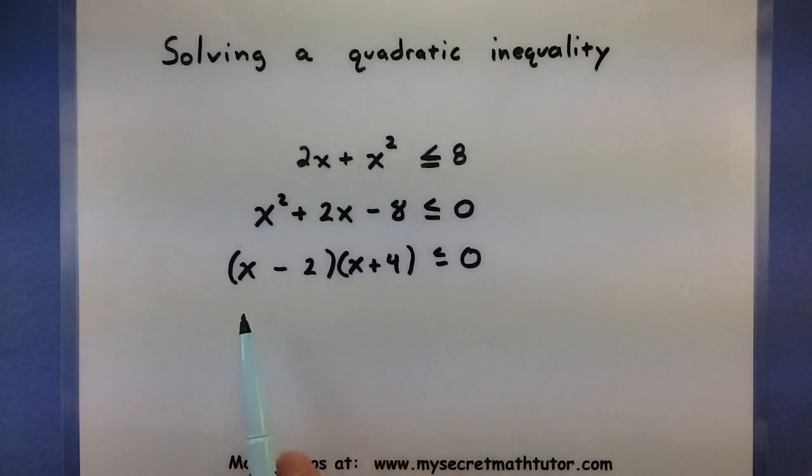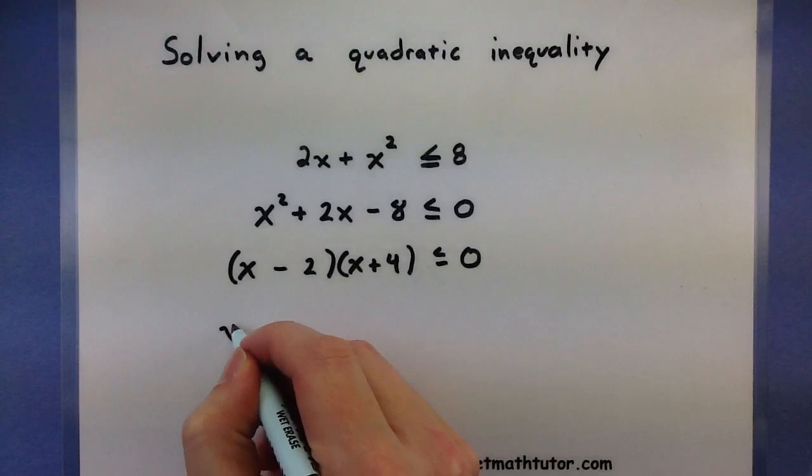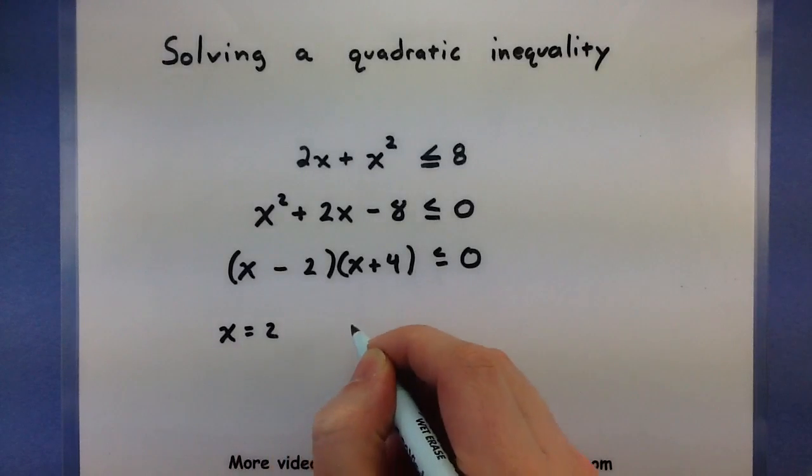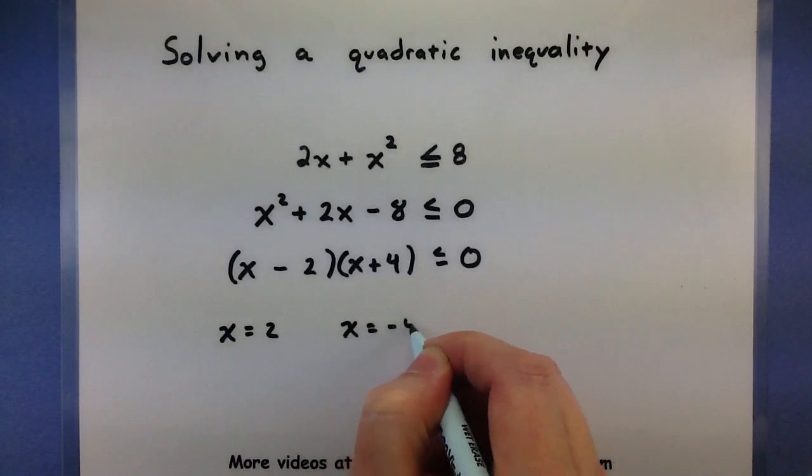A quick check on our first terms, outside and inside terms, and last terms, and it looks like this thing works out pretty good. So when you factor it, you get these two spots where it could equal 0, at x equals 2, and x is equal to negative 4.